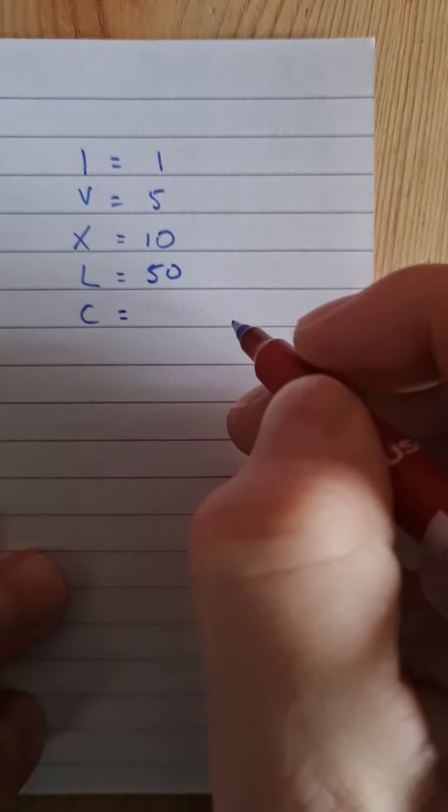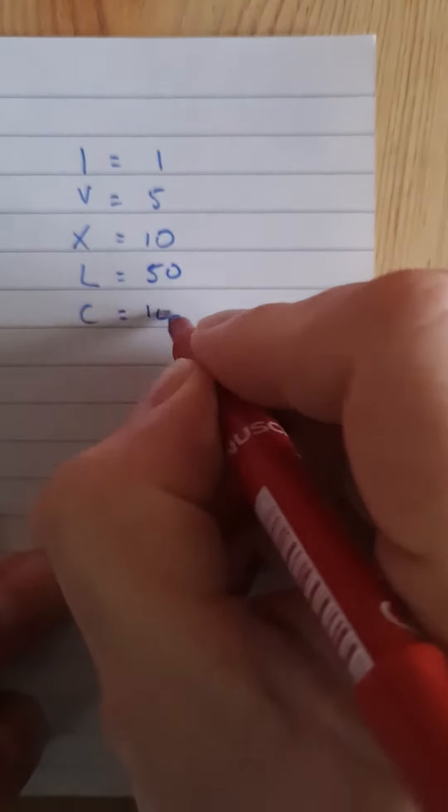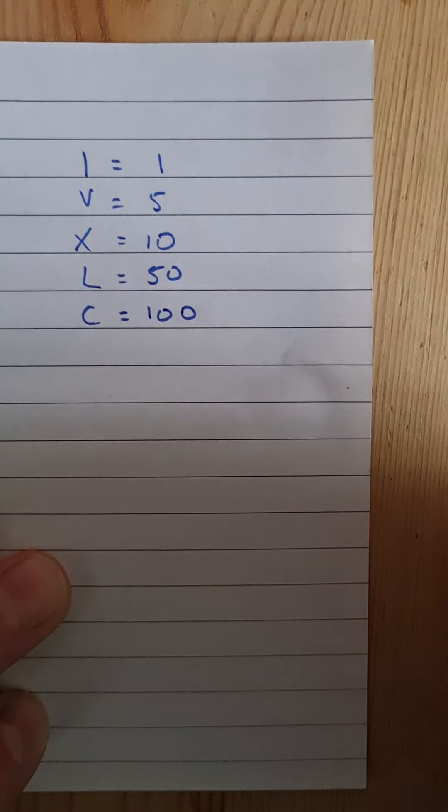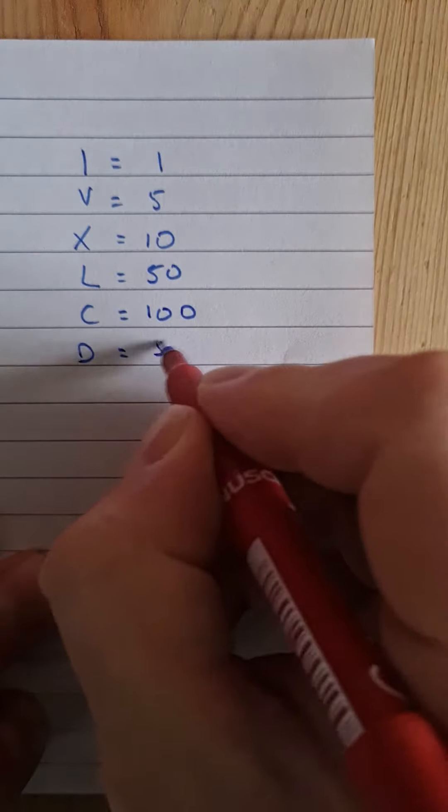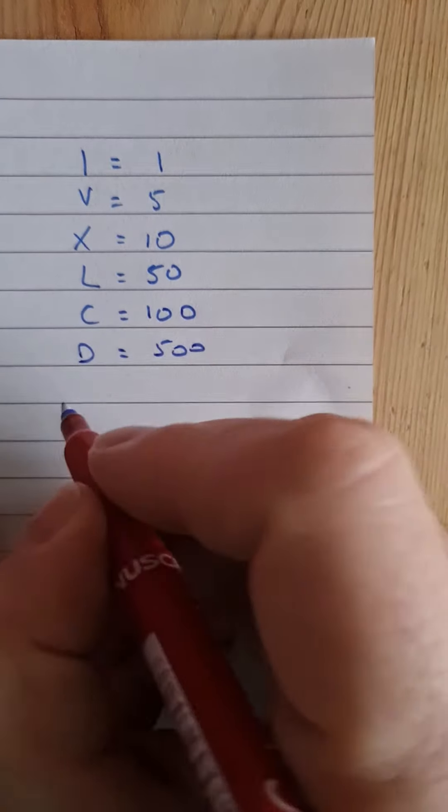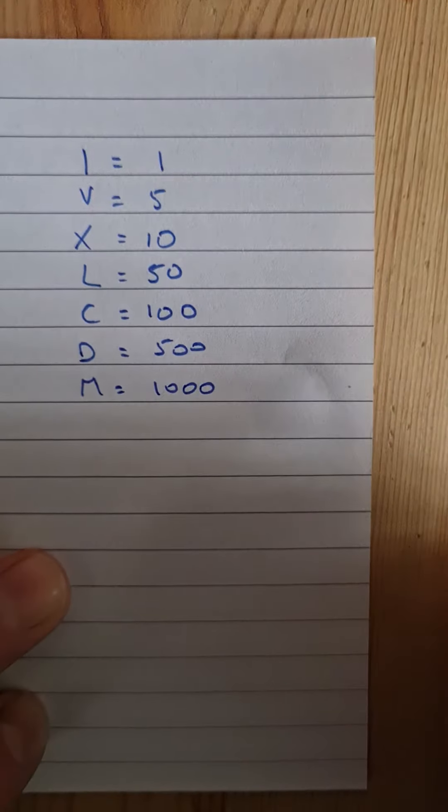C. We know how we remember C. C stands for century and we know that a century is 100 years. D is 500 and then M is 1000 and we remember that M stands for millennium.